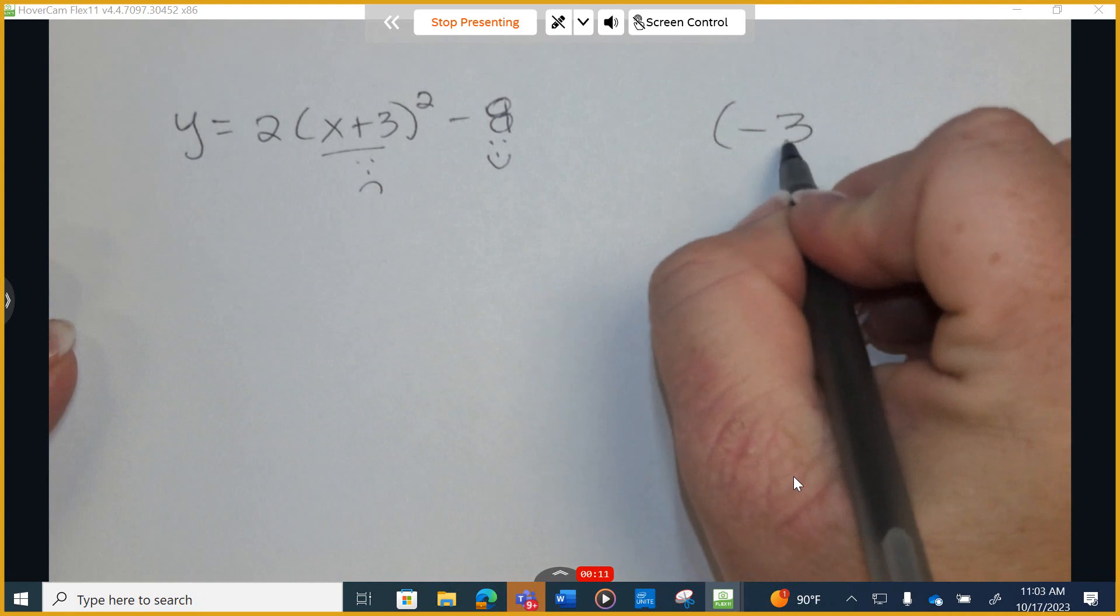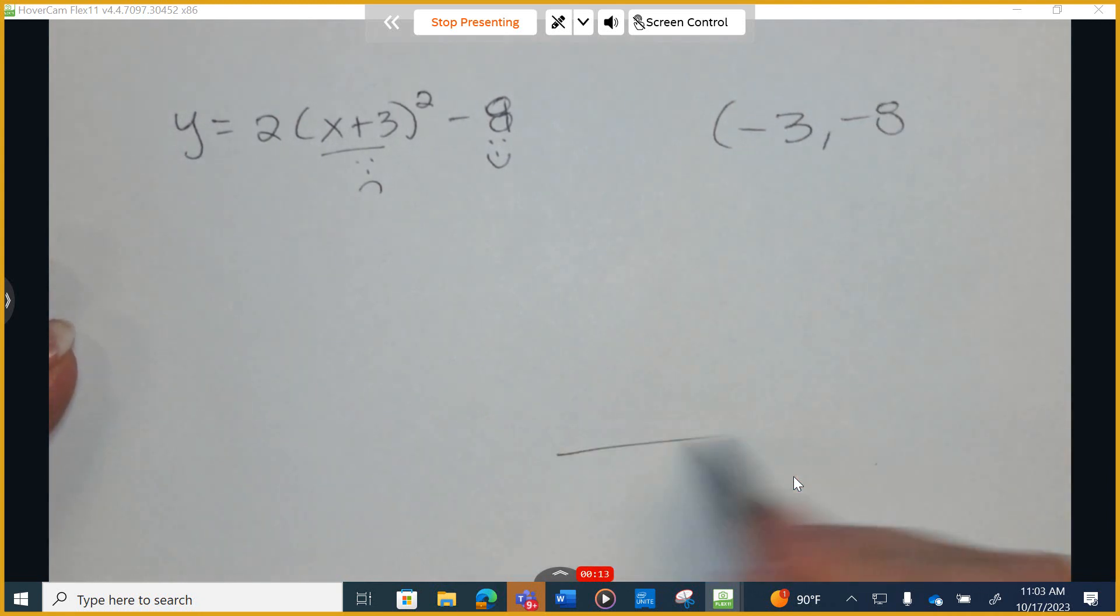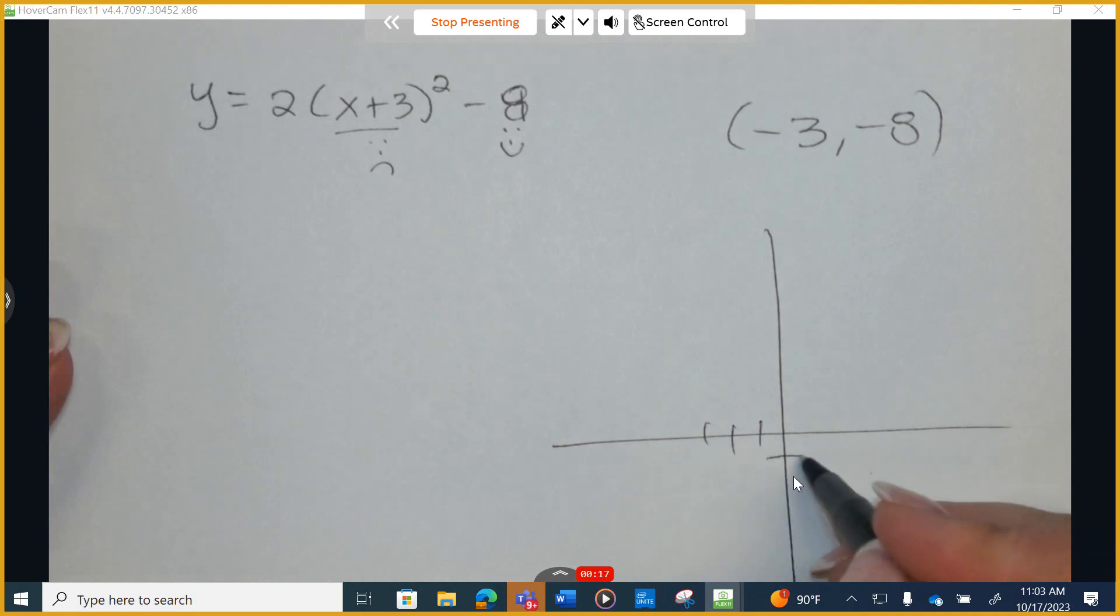So the vertex for this problem is negative 3, negative 8. So I find negative 3, negative 8. One, two, three... one, two, three, four, five, six, seven, eight. This is my vertex.